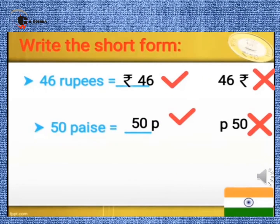Now let's see how to use these short forms, or how to write them. 46 rupees is written with the rupee symbol in front of the amount, that is ₹46. If you draw the symbol behind 46, your answer will be incorrect. For 50 paise, you write 50 and then the small p symbol after it — this is the right way. If you write p in front of the amount, your answer will be incorrect. It is very important to write the amount and symbol correctly.